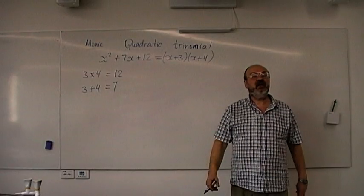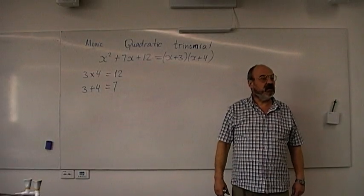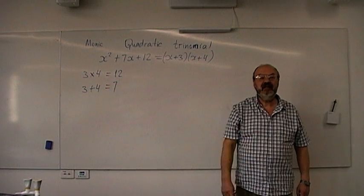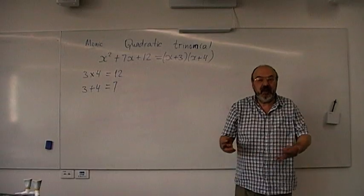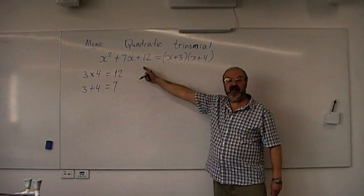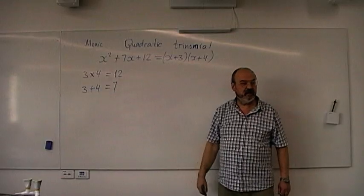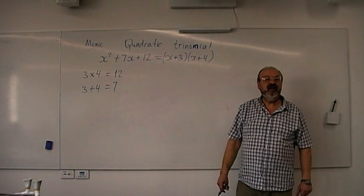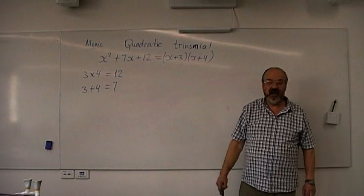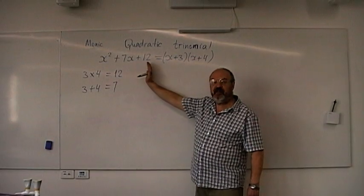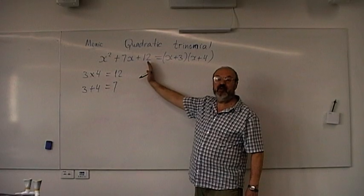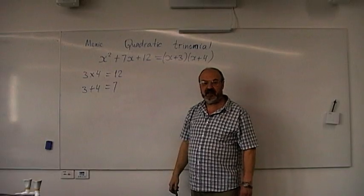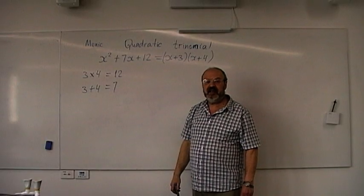How can we check that we factorized correctly? We expand it back — if we expand x plus 3 times x plus 4, we will get the original expression. So to factorize a quadratic trinomial, we are looking for two numbers which multiply to the constant term and add up to the coefficient of x.